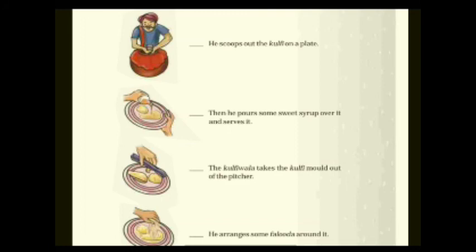The correct order is: first, the kulfi vala takes the kulfi mold out of the freezer. Second, he scoops out the kulfi on a plate. Third, he arranges some faluda around it. Fourth, he pours some sweet syrup over it and sells it. You have to write the correct number in front of each sentence according to this order.